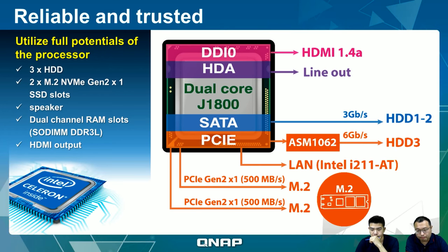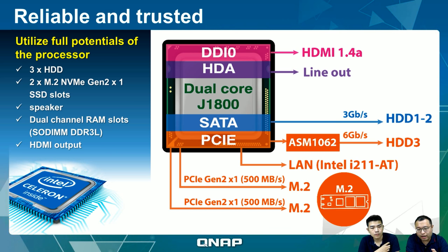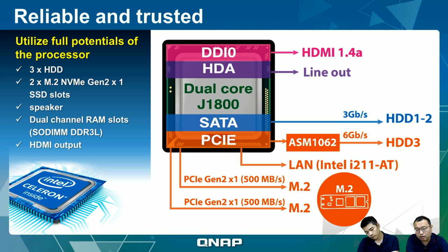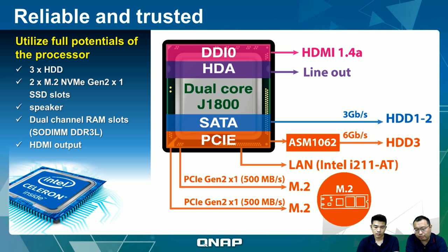This slide shows how the components are connected. On the right-hand side there is HDMI 1.4a providing 1080p full HD resolution output. This model also includes an analog audio line-out so you can connect an audio cable to your amplifier to listen to music. Since the TS-351 is a three-bay model, the first two hard drive slots use native SATA ports at 3 Gbps, which is sufficient for hard drives when you need big storage capacity.